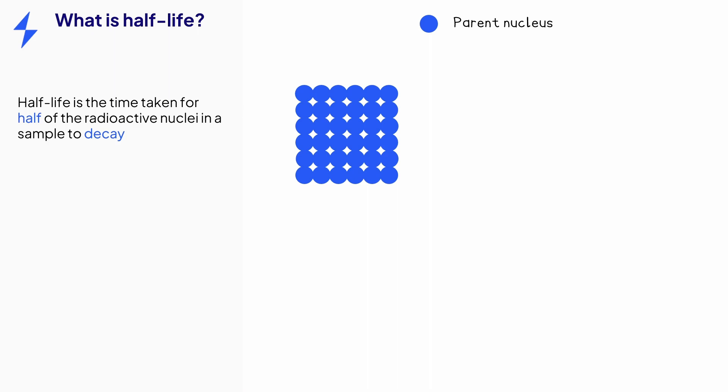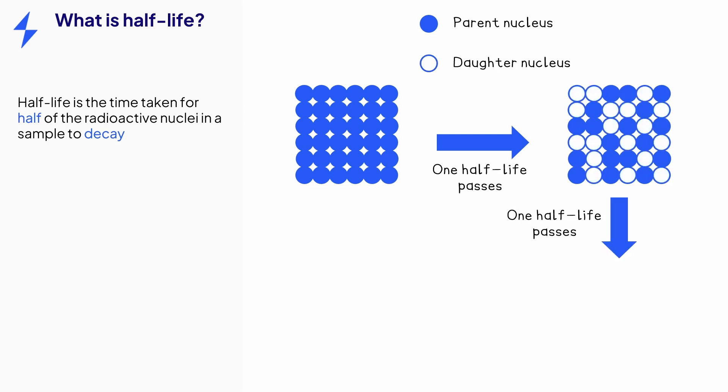These blue circles on the right represent a sample of radioactive parent nuclei. After one half-life passes, half of these have decayed to the daughter nucleus. After another half-life passes, half of the remaining parent nuclei decay again, and so on.